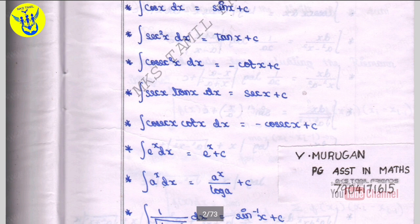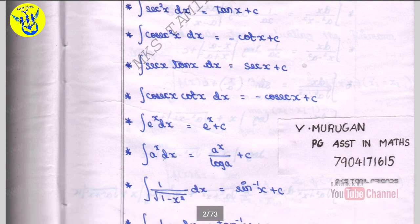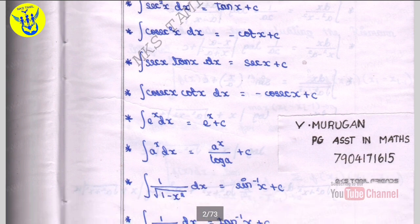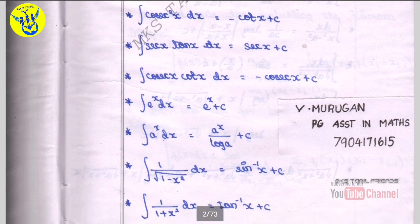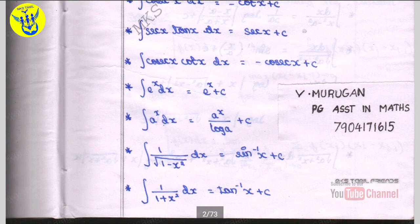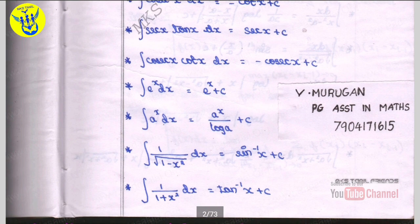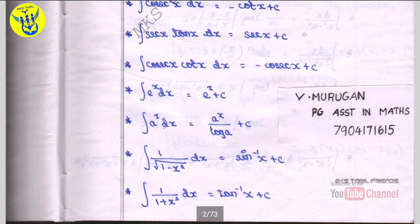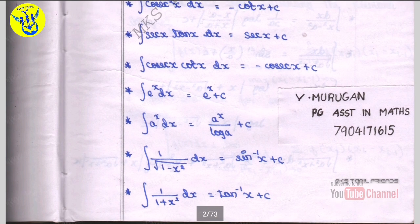Integral 1 by root of 1 minus x square dx is equal to sin inverse x plus c. Integral 1 by 1 plus x square dx is equal to tan inverse x plus c.